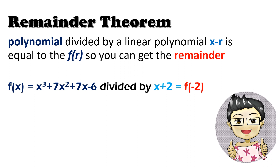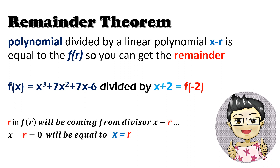Let's have our example. f of x is equal to x cubed plus 7x squared plus 7x minus 6 divided by x plus 2. Pag dinivide natin tong dalawang to, it's going to be equal to f of negative 2. Saan ang galing yung negative 2 natin? Dito siya galing sa divisor na x plus 2. Inequate lang natin siya sa 0, tapos it-transpose yung positive 2, kaya nakuha yung negative 2.